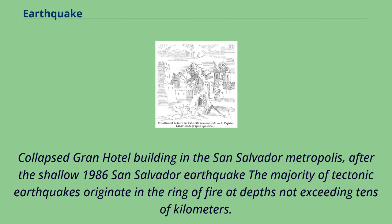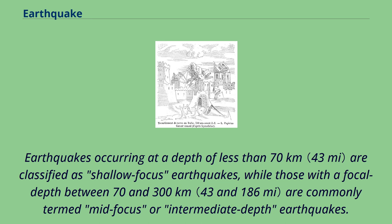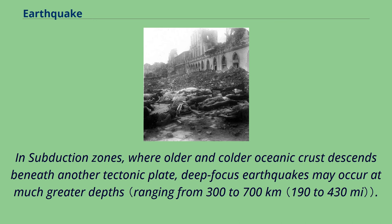The majority of tectonic earthquakes originate in the Ring of Fire at depths not exceeding tens of kilometers. Earthquakes occurring at a depth of less than 70 kilometers are classified as shallow focus earthquakes, while those with a focal depth between 70 and 300 kilometers are commonly termed mid-focus or intermediate-depth earthquakes. In subduction zones, where older and colder oceanic crust descends beneath another tectonic plate, deep-focus earthquakes may occur at much greater depths.